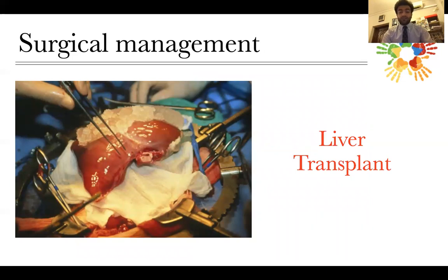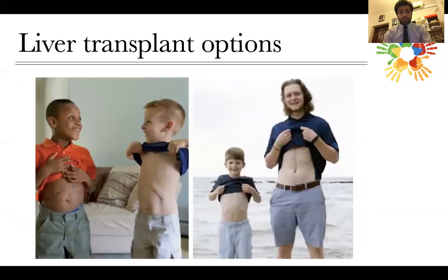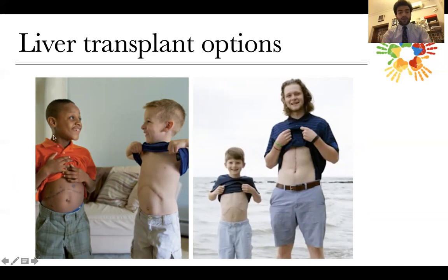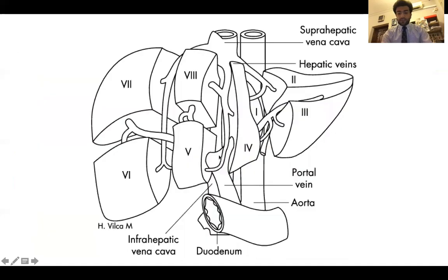The definitive management is liver transplant, a very large topic. There are two options: living donor — very common and popular in children as they don't need a large hepatocyte mass, and the donor is mostly a family member such as a parent — or deceased donor liver transplant, either from a heartbeating or non-heartbeating donor. Most commonly in pediatrics, children receive a living donor liver transplant from a family member.